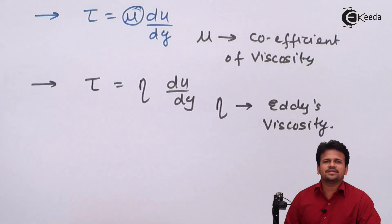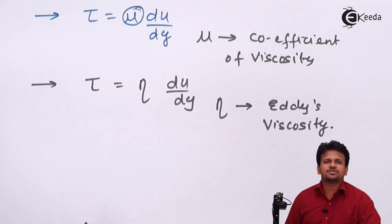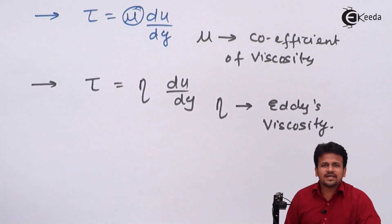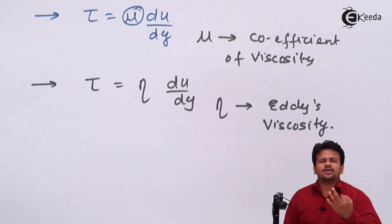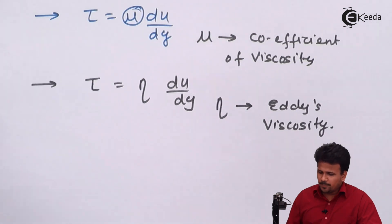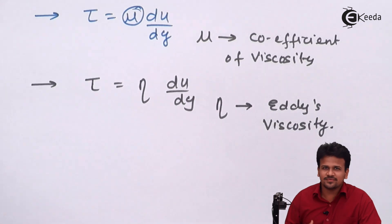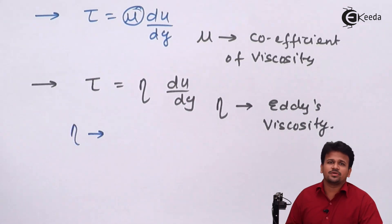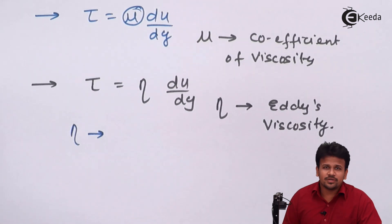In laminar flow, mu — the coefficient of viscosity — is a property of a fluid, as we studied in fluid statics where the three properties of fluid are viscosity, surface tension, and compressibility. But eddy viscosity eta is not a property of a fluid; it is a property of a flow.